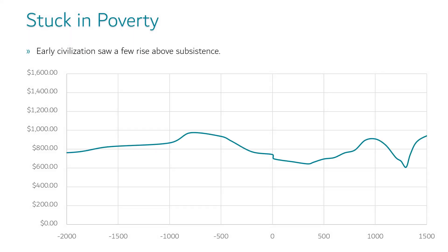After the shift to agriculture and the growth in cities and empires, a lot of technological progress occurred. The Egyptians invented paper and medicines, the Romans invented concrete and aqueducts, the people of ancient Mesoamerica like the Maya, Aztec, and Toltec invented chocolate, and the Chinese invented the compass, gunpowder, and printing. Nevertheless, in all of these places, income per head barely budged.